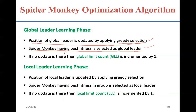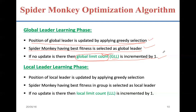If in this phase the global leader is not updated, it indicates scarcity of food. A parameter called the global limit count is incremented by one each time this happens. This counter keeps incrementing as long as the solution is not updated across iterations.